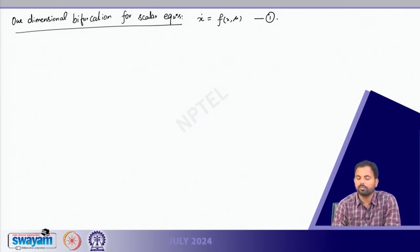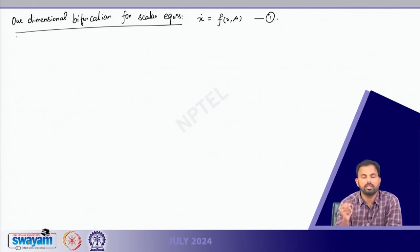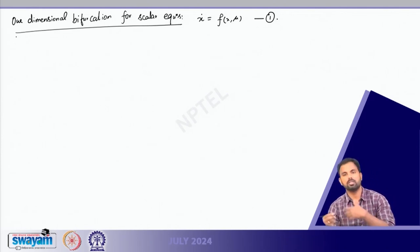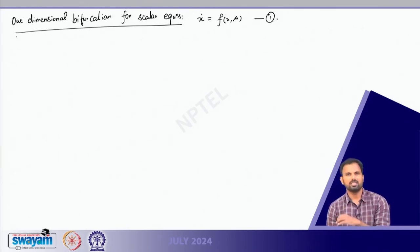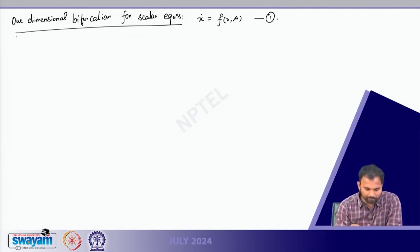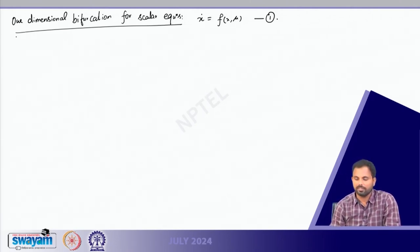We discussed several types of bifurcation for this scalar equation by investigating equilibrium point curves, and from that we learned about whether there is a bifurcation at one point or two points, which point has stability and asymptotic stability. The figures we obtained are called bifurcation diagrams.